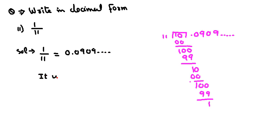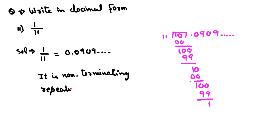What we call this — it is non-terminating, meaning the remainder is never 0. It is non-terminating. Look at the block of numbers: it is 0, 9, 0, 9 — this will continue as 0, 9, 0, 9. So it is non-terminating repeating decimal expansion. So, 1 upon 11 ka decimal expansion jo hai, wo hai non-terminating repeating decimal expansion.